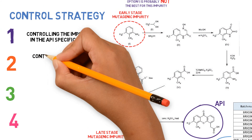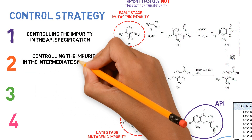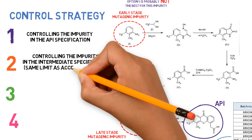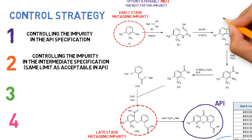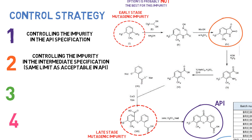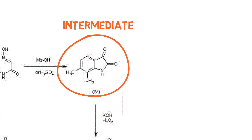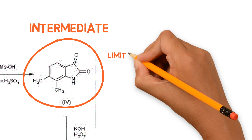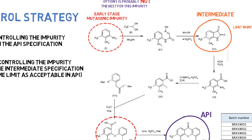Option 2: Controlling the mutagenic impurity in an intermediate specification with the same limit that is acceptable for this impurity in the API. This situation can be applied when the impurity is generated before a certain intermediate of the process and there is no possibility of its formation after that intermediate. Then, it would be appropriate to include a test for the control of the impurity in the intermediate specification.